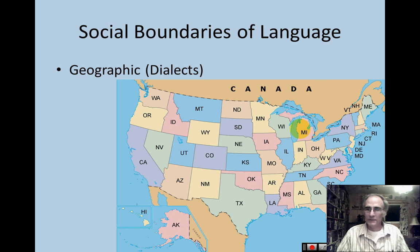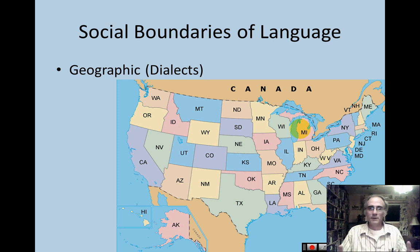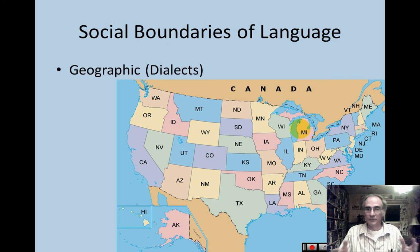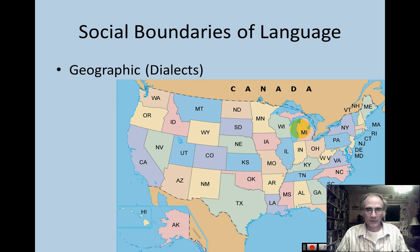Then we have dialect. Dialect identifies where somebody is from geographically, because different areas of the world have different dialects. Even though people all around the United States speak English, somebody from Texas will have a slightly different dialect than somebody from Maine, Washington, Florida, or Colorado. Even though they speak English in the United Kingdom, we can recognize not only slightly different terminology but also their dialect.